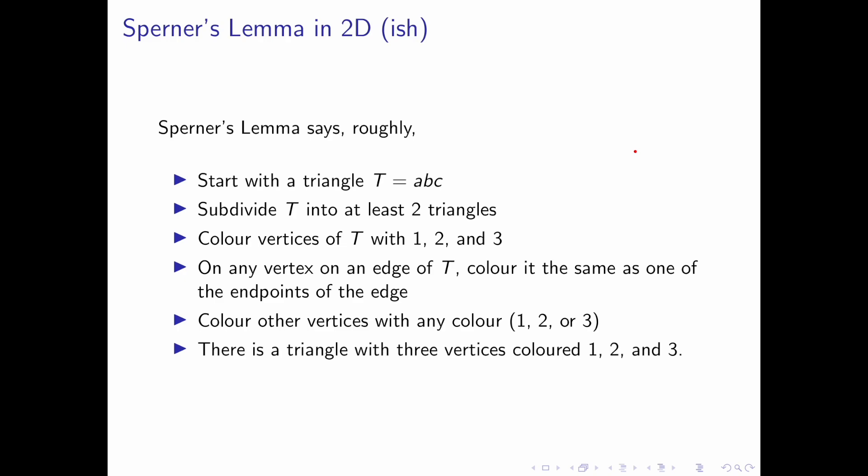Sperner's Lemma roughly goes as follows. We start with a triangle T labeled with vertices ABC. As an example, this will be our triangle T with vertices A, B and C.